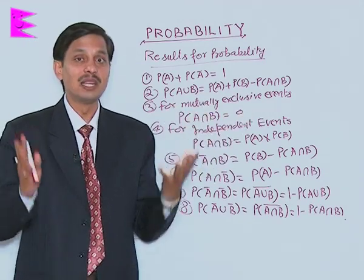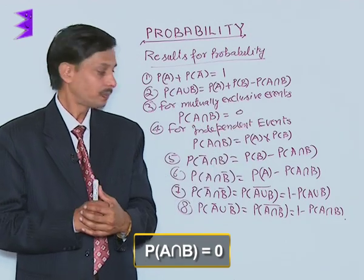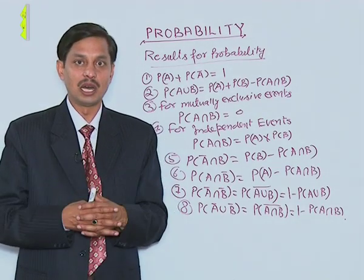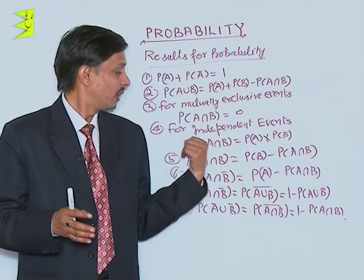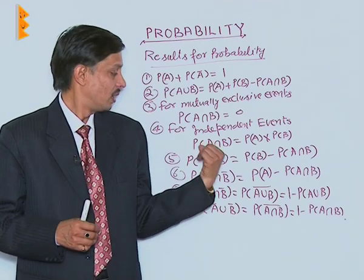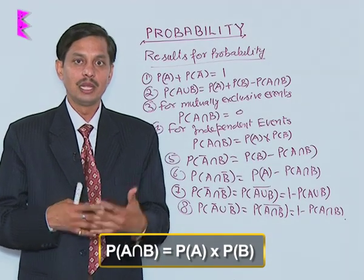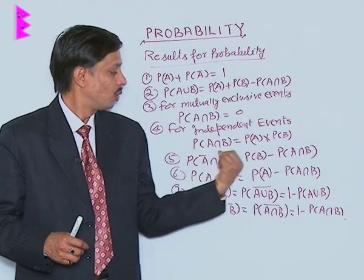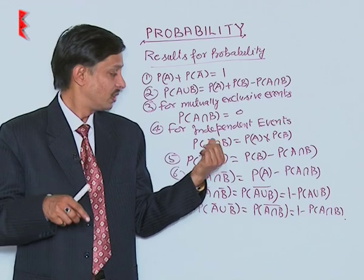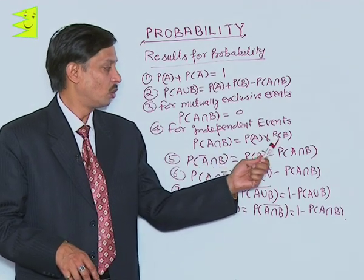For mutually exclusive events, as I explained, nothing is common, so probability of A intersection B is 0. For independent events, if probability of A intersection B is 1/4, probability of A is 1/2, and probability of B is 1/2, then P(A∩B) = P(A) × P(B), because 1/4 equals 1/2 into 1/2. If this relation holds true for two events, we say the events are independent — and if events are independent, this relation must hold true: P(A∩B) = P(A) × P(B).